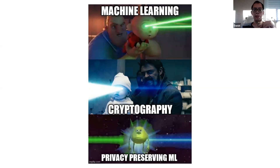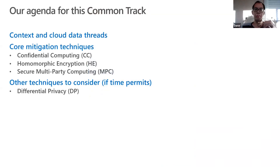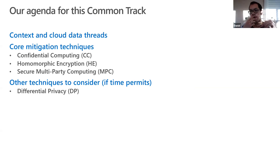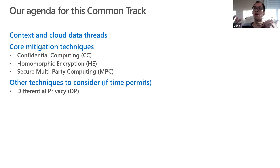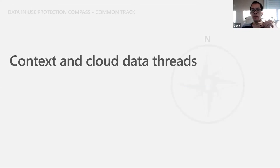Today I will show you a brief introduction about the context and threats we face, especially on the cloud. Then we'll cover three techniques: confidential computing, homomorphic encryption, and secure multi-party computation. If we have time, we can also look at differential privacy, which is orthogonal to those methods. This presentation comes from my internship at Microsoft, so you'll see some Microsoft mentions, but please don't see this as advertisement.